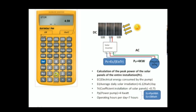We get 4.59. We store this value in memory slot two. Now we have all the values we need to find the peak power of the solar panel.